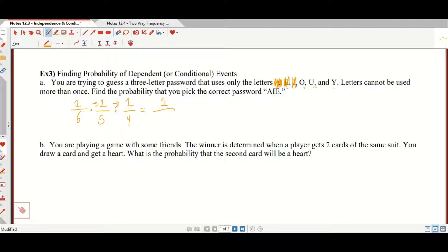1 times 1 times 1 is still 1. 6 times 5 times 4 is 120. So you actually have a 1 in 120 shot, which is slightly better than our last one, which is 0.0083 repeating, which is 0.83 repeating percent.